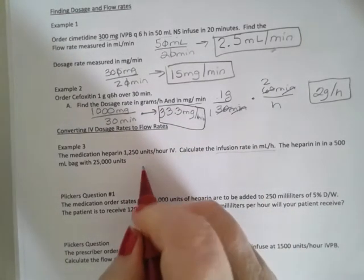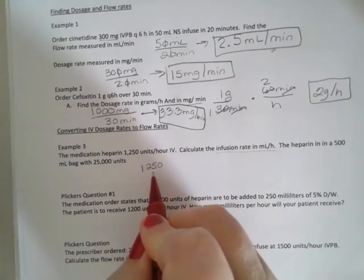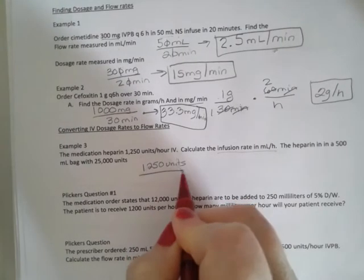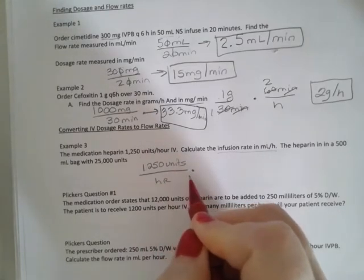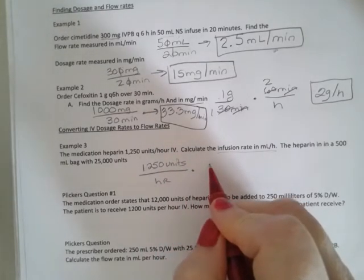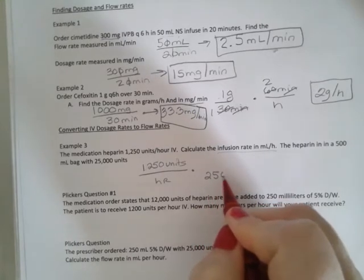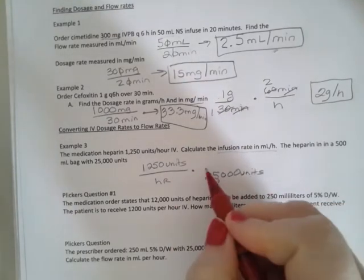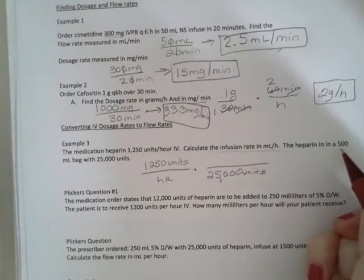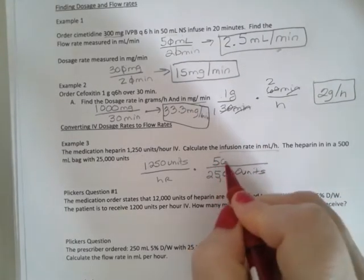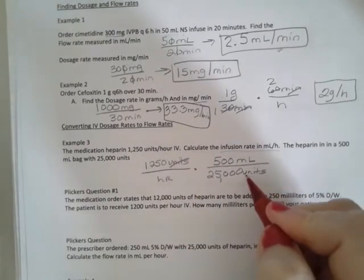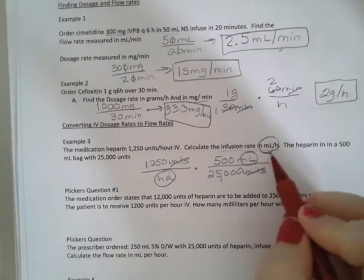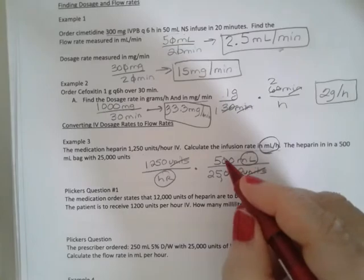So I'm going to start with my order, 1250 units per hour. Times that by what my strength is, which is 25,000 units. And I put the units in the denominator so my units cancel. And in my numerator, I'm going to put my 500 milliliter bag. My units cancel out and I'm left with mLs per hour, which is what the question is telling us we want. So now it's just a matter of multiplying and dividing.